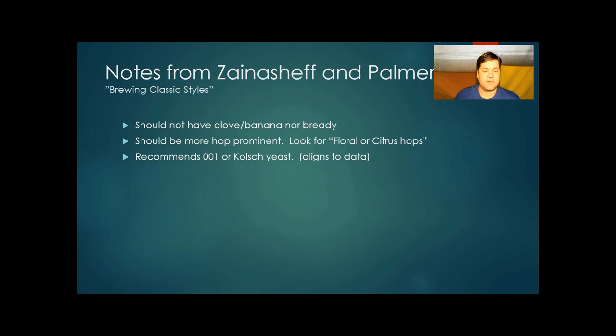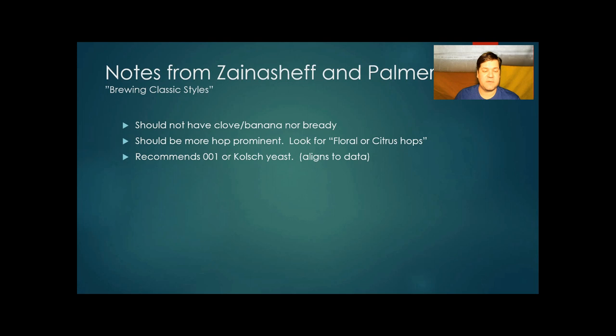Brewing classic styles says you shouldn't have that banana clove character. You should look for floral or citrus hops. Sounds familiar, doesn't it? And it recommends using the Chico or a Kolsch strain. When I read this after I went through the data, I was like, well, that data is pointing out exactly what they're saying here.